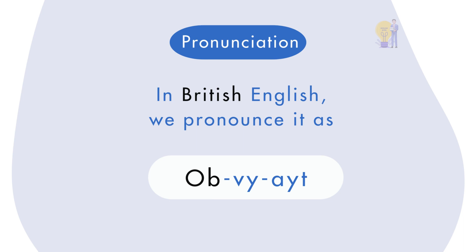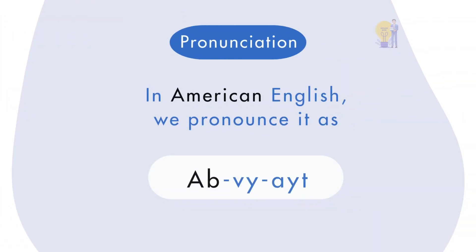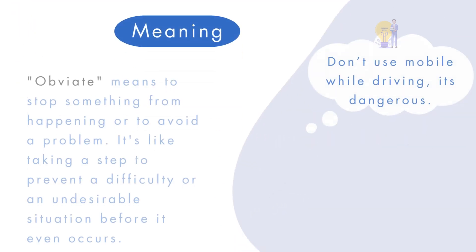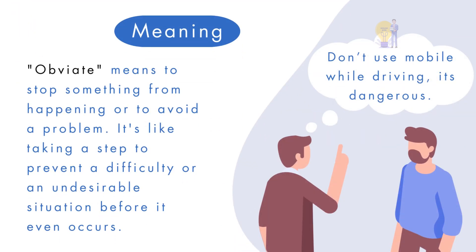In American English we pronounce it as 'obviate'. Obviate means to stop something from happening or to avoid a problem. It's like taking a step to prevent a difficulty or an undesirable situation before it even occurs.